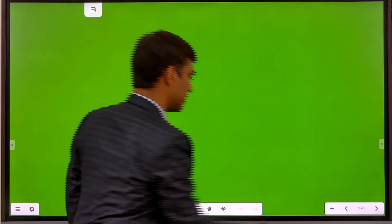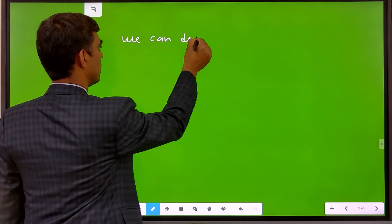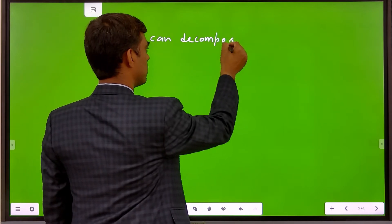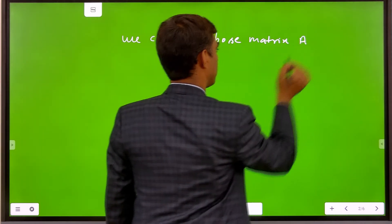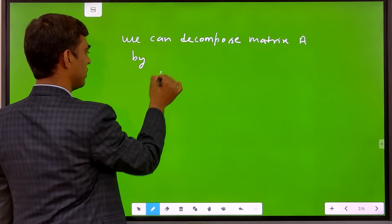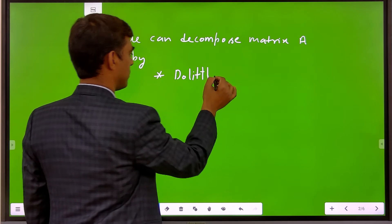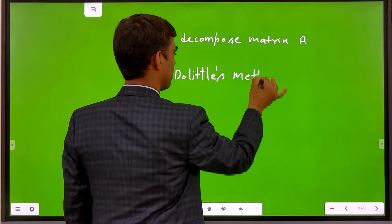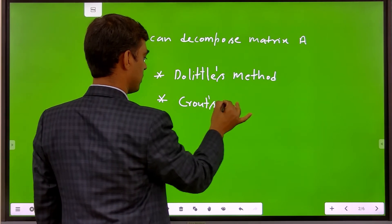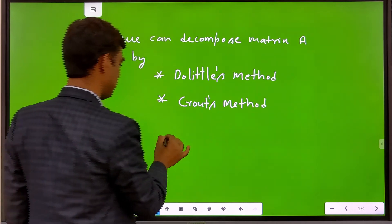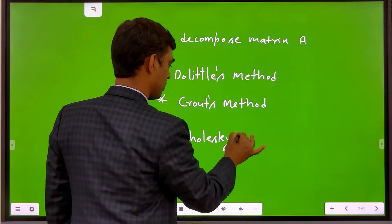We can decompose matrix A by three methods: the first one is Doolittle's method, the second one is Crout's method, and the third one is Cholesky's method.